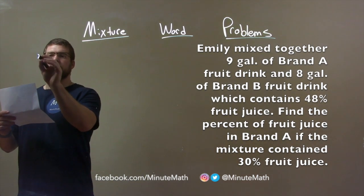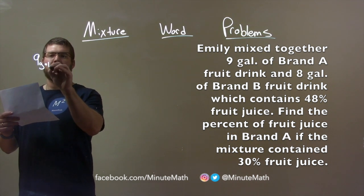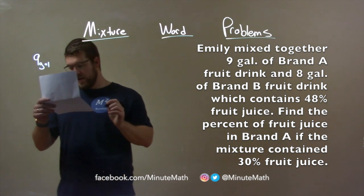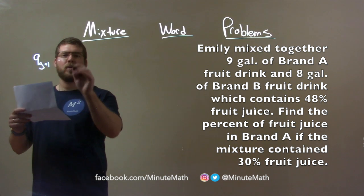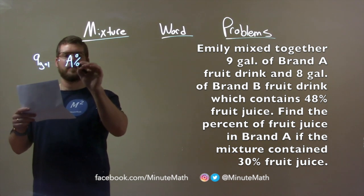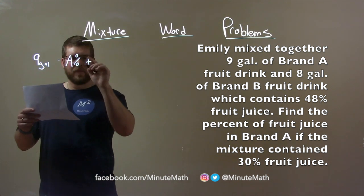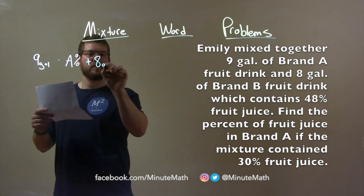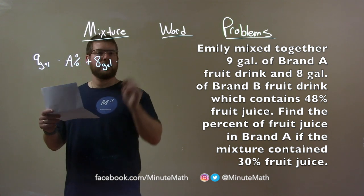We have 9 gallons of Brand A. So, we take 9 gallons and time whatever A's percent is. Then, if we add that to 8 gallons of Brand B, alright,